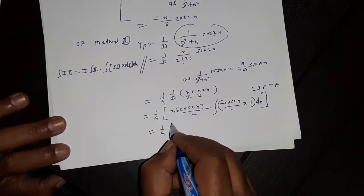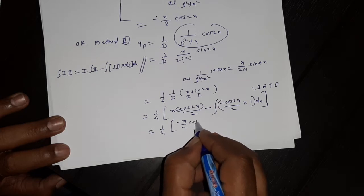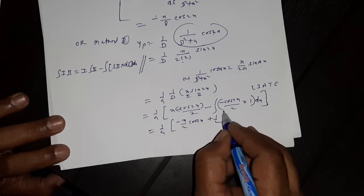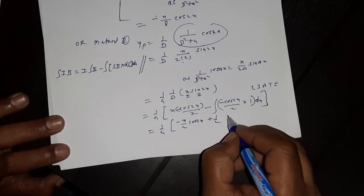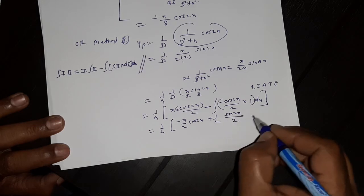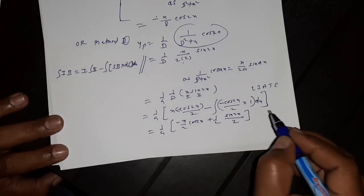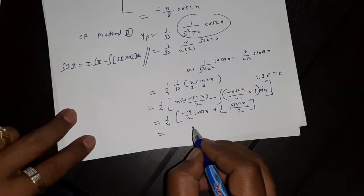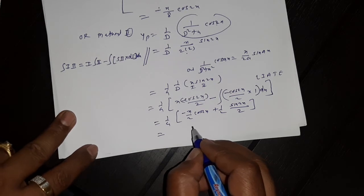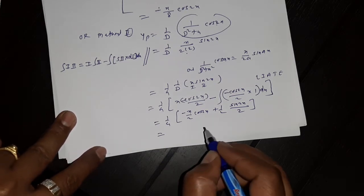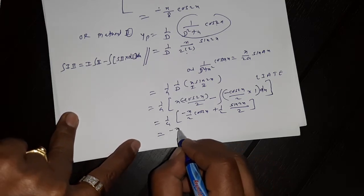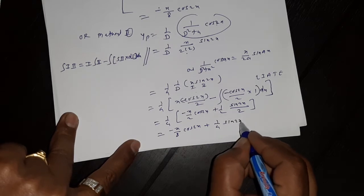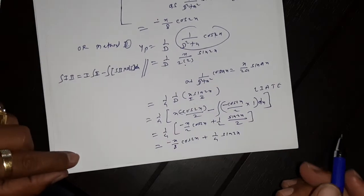We have (1/4)[(-x/2)cos(2x) + (1/2) · sin(2x)/2]. The minus·minus becomes plus, and integration of cos(2x) = sin(2x)/2. So the final answer is -x/8 · cos(2x) + 1/4 · sin(2x)/2. By Method 1 we have -x/8 · cos(2x), and by Method 2 we have -x/8 · cos(2x) + 1/8 · sin(2x).